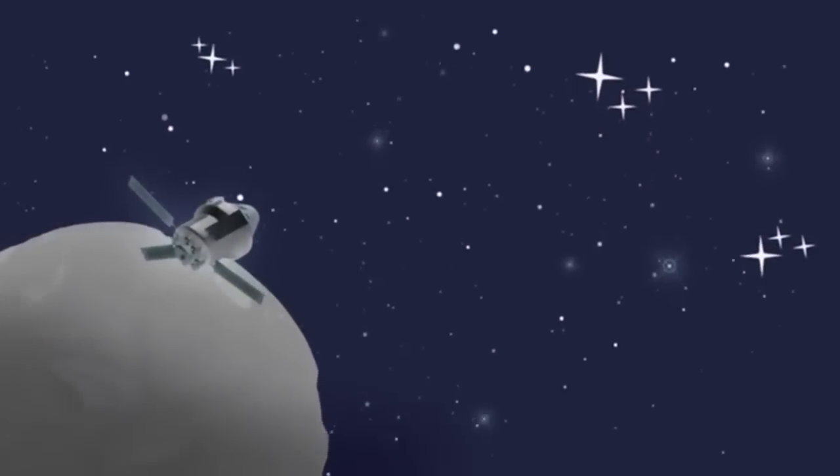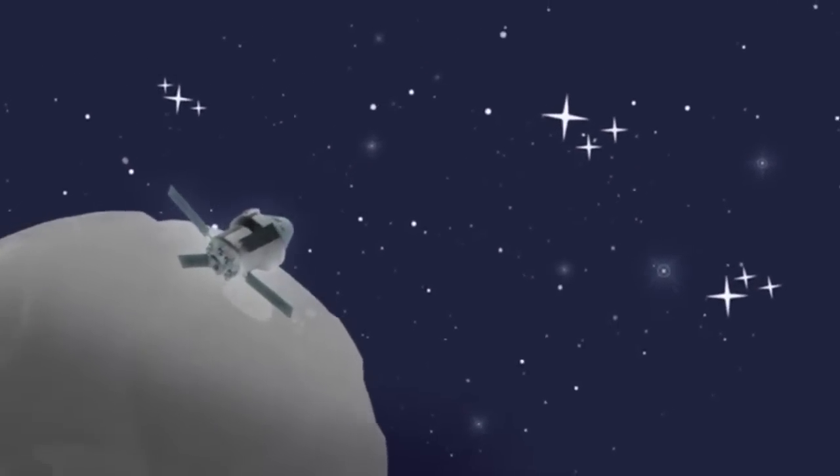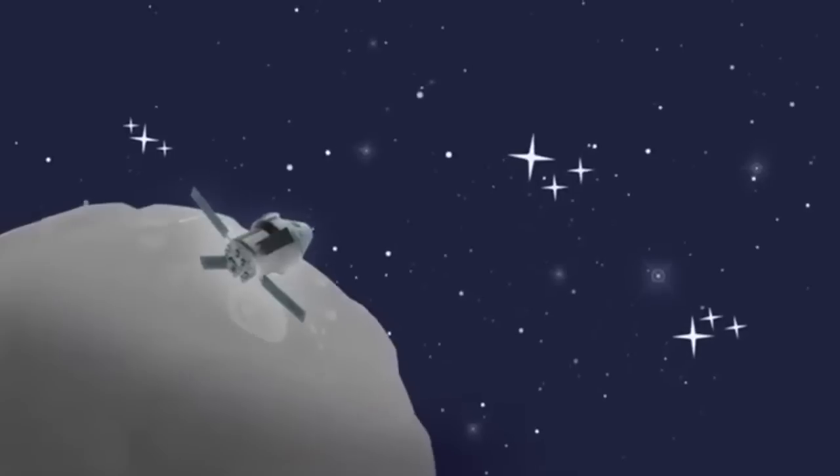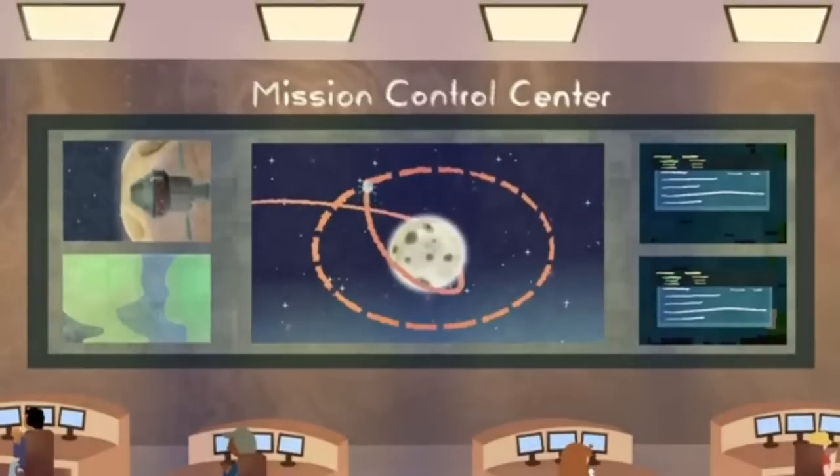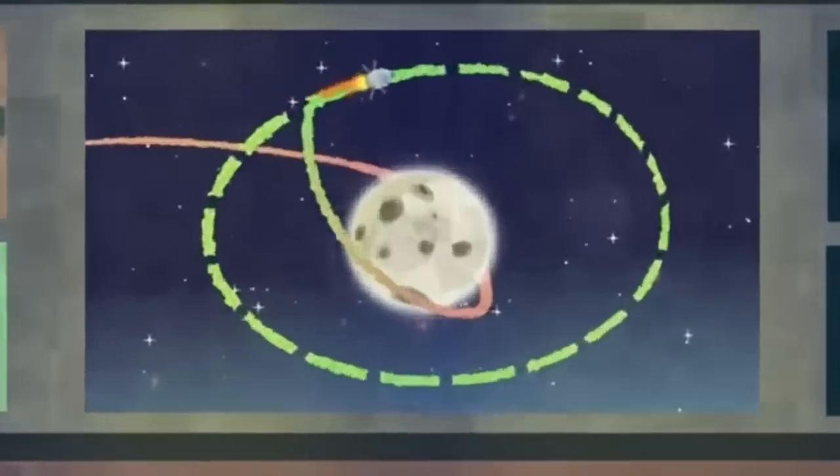When Orion gets near the Moon, lunar gravity will pull the spacecraft to about 60 miles above the Moon's surface. Mission controllers precisely fire the Service Module's engines, aiming for the exact altitude of a Distant Retrograde Orbit.